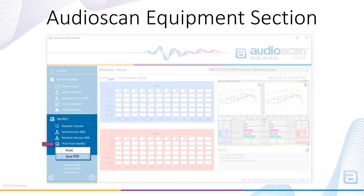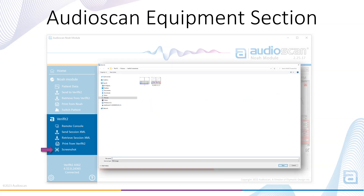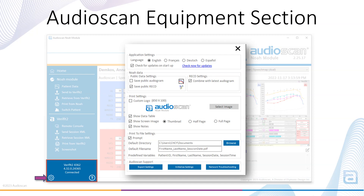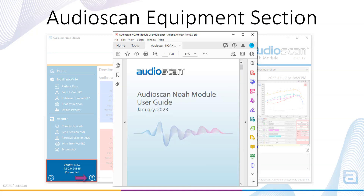Print from Verifit 2 prints an AudioScan equipment generated report. This report is configured and set up under the print menu of the Verifit 2 or Axiom. Screenshot is a quick way to capture your current AudioScan screen and save the image to your PC. The bottom of the equipment menu shows the product name and serial number, along with the current software version and connection status. The gear icon in the bottom left takes you to Settings, where you can check for software updates, troubleshoot and configure the AudioScan NOAA module. The question mark icon takes you to the latest user guide for the AudioScan NOAA module.